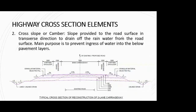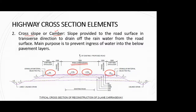Coming to the next aspect of your cross section: another important element is camber, also known as cross slope. It is nothing but the transverse slope provided to your pavement. Generally your pavement surface is divided into two parts — the main carriageway, which is the width on which vehicles will ply, having lane markings. This TCS is a two-lane carriageway, so one is the up lane and one is the down lane.